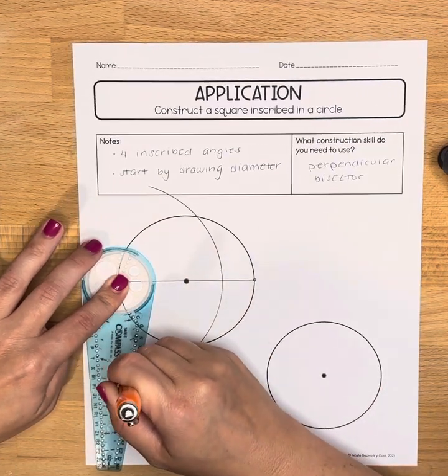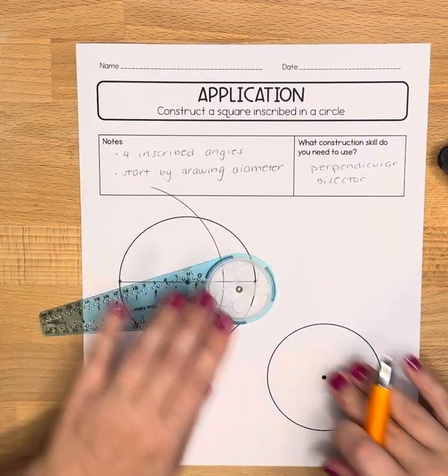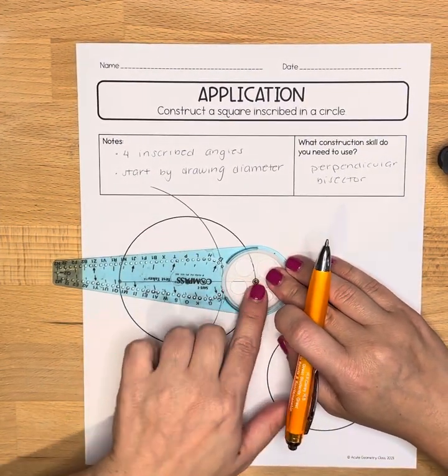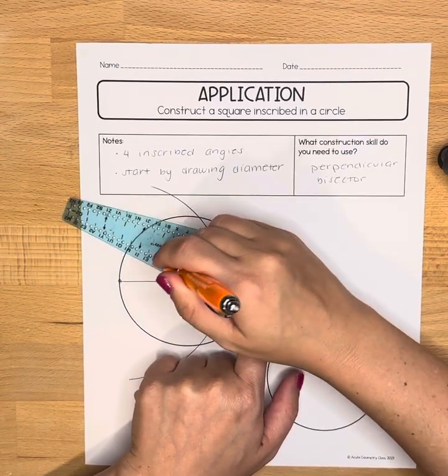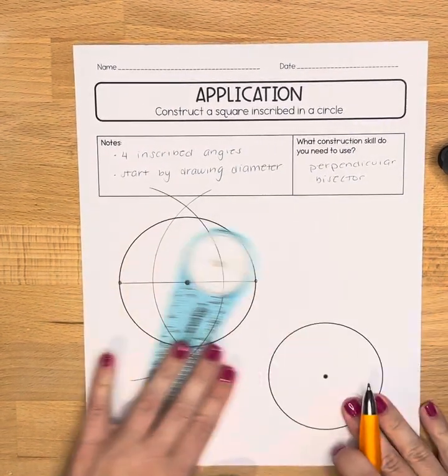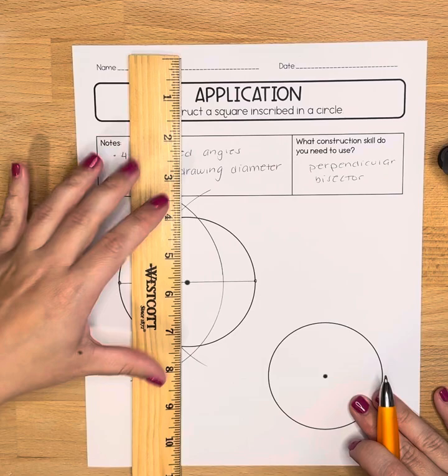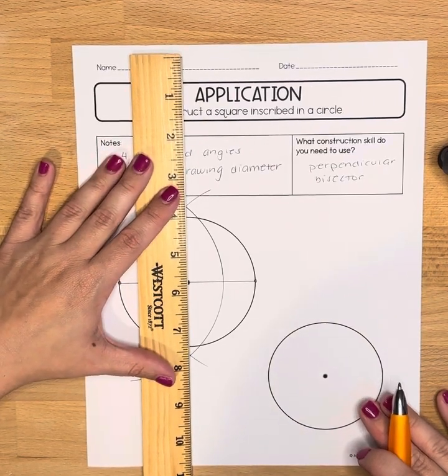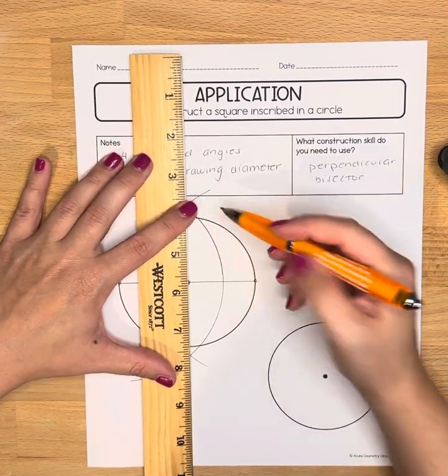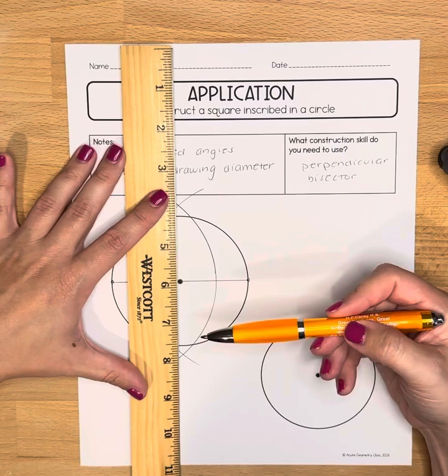So I'm going to find a marking that's more than halfway through. I'm going to reverse this whole process and now I'm going to use my straight edge to connect where those two arcs intersected.